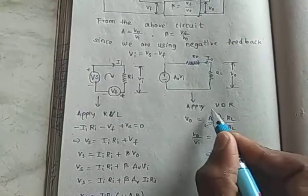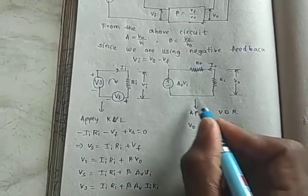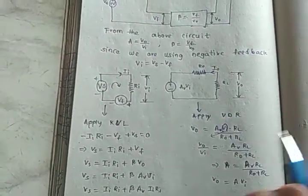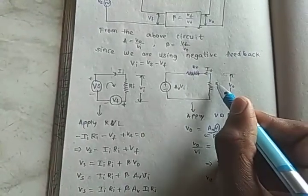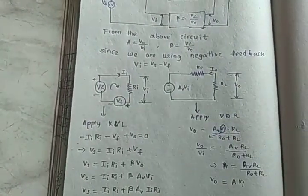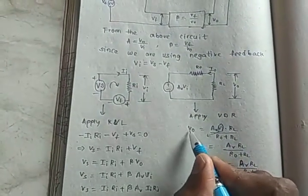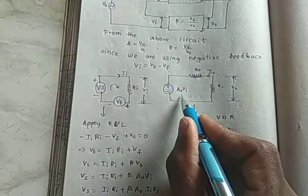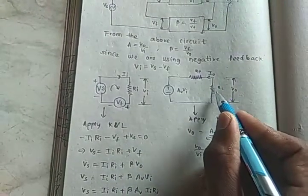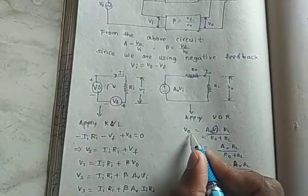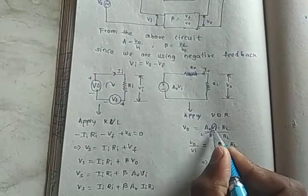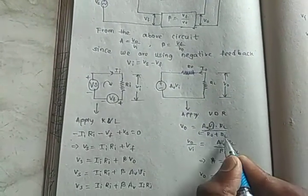And coming to here, apply voltage division rule to this circuit. We need to find out voltage across here RL. So V0 is equal to AVVI into RL by R0 plus RL. V0 is equal to AVVI into RL by R0 plus RL.